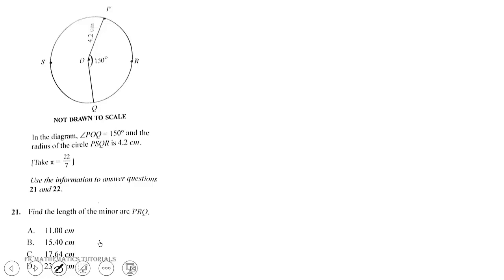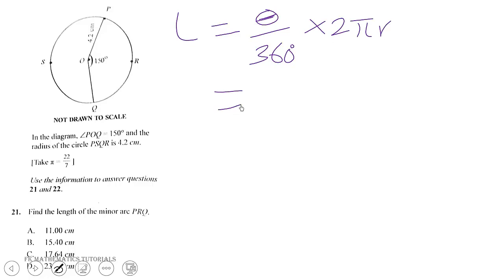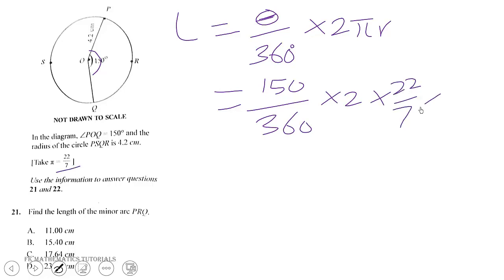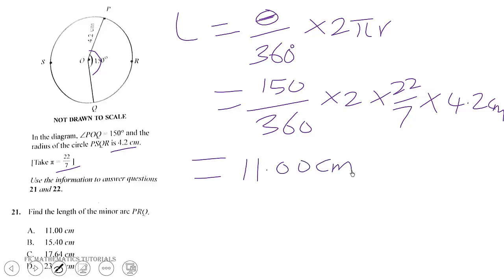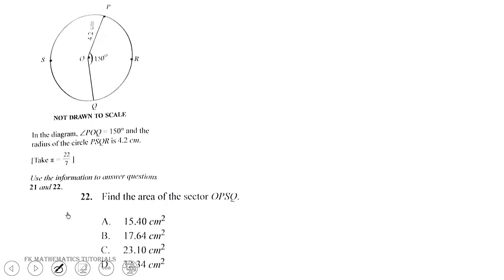The length of an arc is given by the angle at the center over 360 degrees times 2πr. So theta is 150 degrees: 150 over 360 times 2 times pi (22/7) times r, where r is the radius of the circle which is 4.2 centimeters. When you simplify this you get 11.00 centimeters, so the correct answer is A.